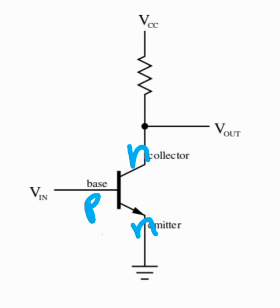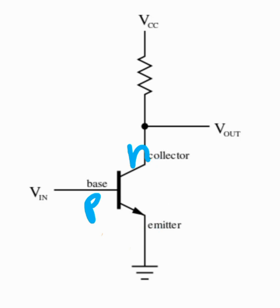is again N. The direction of the current flows from collector to the emitter, that's why it is called an NPN transistor. The input signal is applied to the base, the emitter is grounded, and the collector is